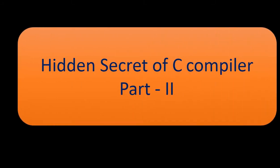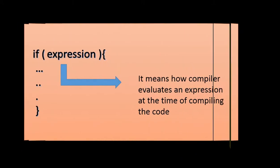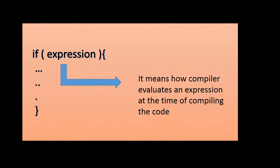Hello friends, in this video we're going to see the hidden secret of C compiler part two. What is that? Let's see the internal hidden secret of if condition in C - it means how compiler evaluates an expression at the time of compiling the code. Maybe you feel that it is very easy, but actually it is not.